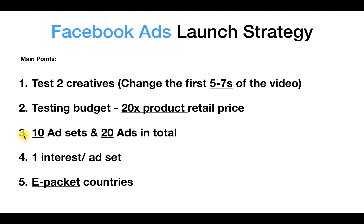Thirdly, we're going to have 10 different ad sets each with a $20 per ad set budget, giving a total of 20 ads because we've got two different ad creatives per ad set. Fourthly we're going to have one interest per ad set — that's the variable we're going to be testing within each ad set — and then obviously we've got a different variable within our ads. So we've got two different variables that we're testing to find the optimal conditions for scaling and moving forward.